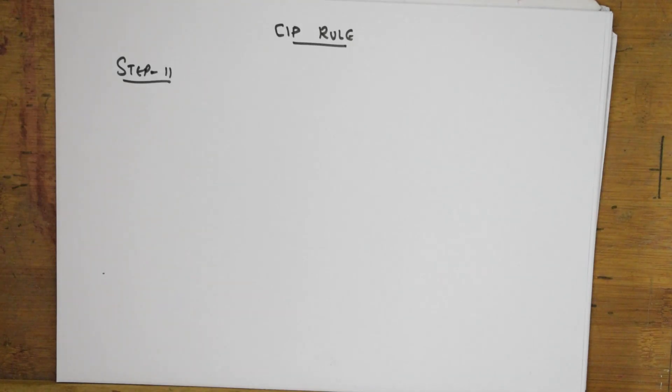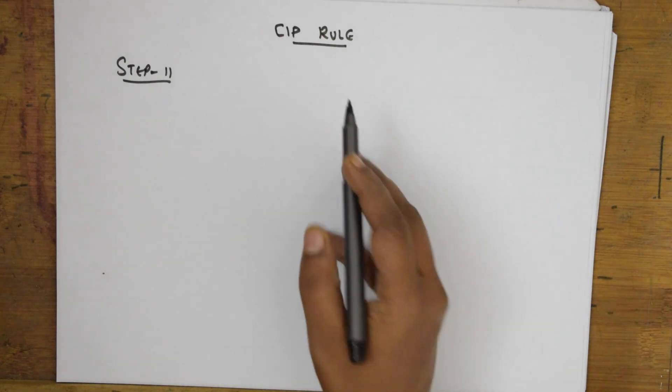Welcome back students to one more session of general organic chemistry. In the previous video, we learned about the CIP rule and how to name the R and S system nomenclature. We've already seen step 1 of the CIP rule.